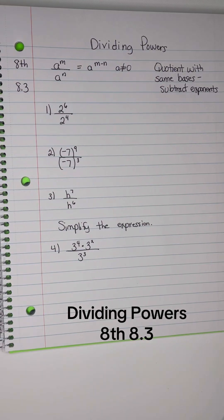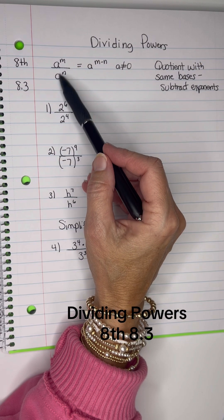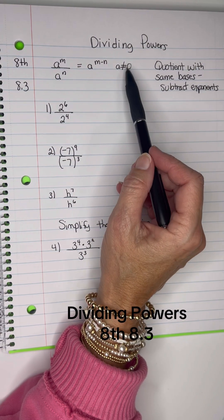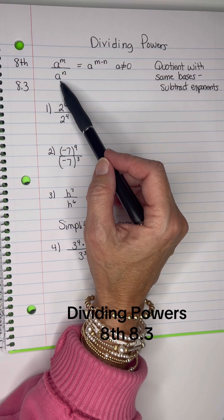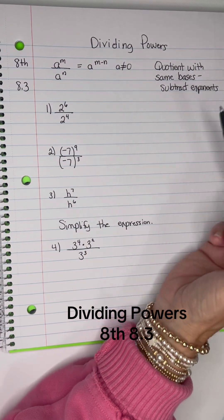Now let's look at dividing powers. Your general rule is A to the M divided by A to the N, same base. You're going to subtract your exponents. But remember, your A cannot be 0 because we can't divide by 0. So equations with the same bases, subtract your exponents.